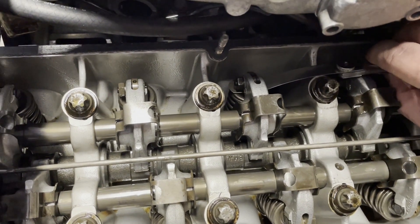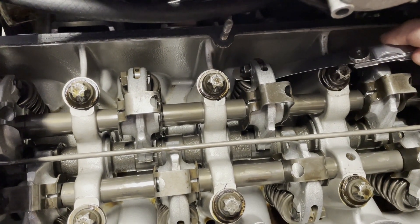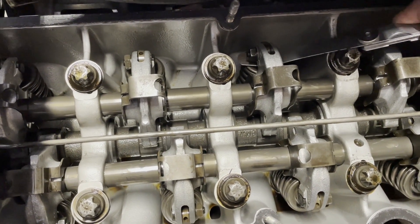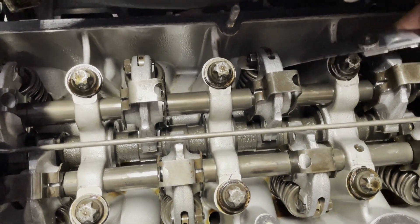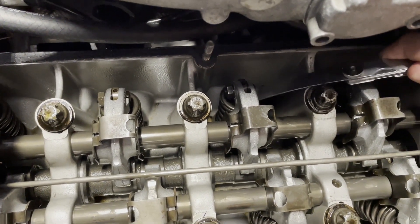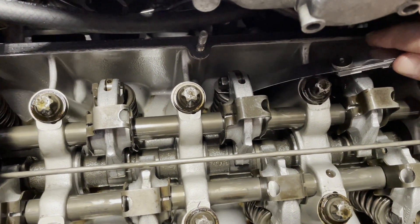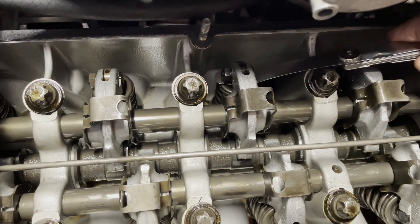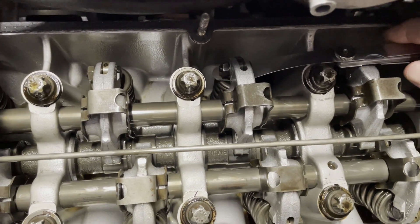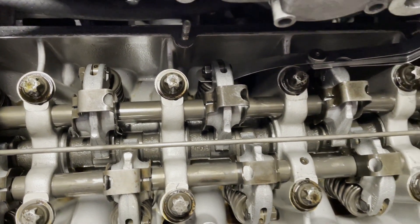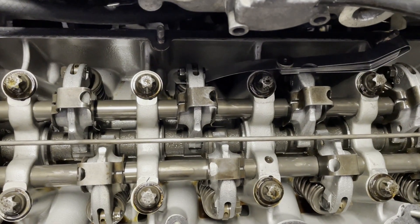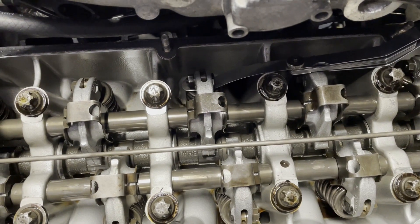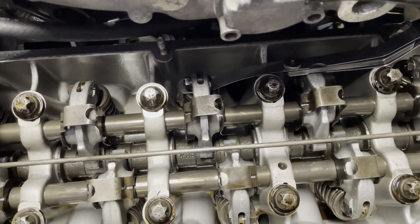If you want to see what too loose looks like, you can see my feeler gauge here. I can just move this around in here anywhere I want to. So that is called too loose and we're going to have to tighten that sucker down. This is the number four intake. So the exhaust on number four was tight and the intake side on number four was loose. We're going to put three hands on this thing and get it tightened up.